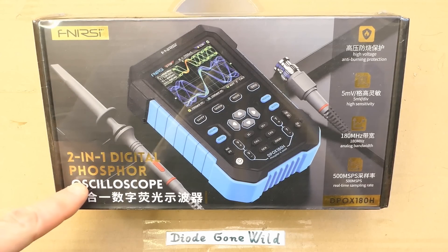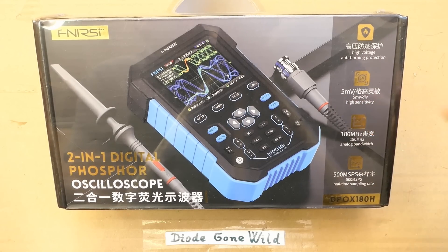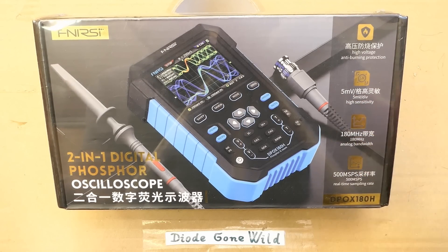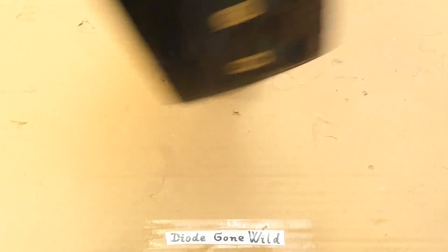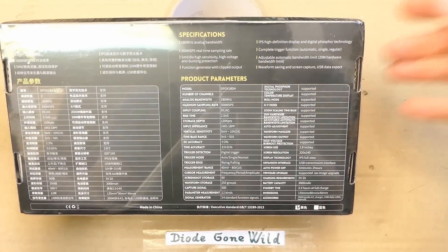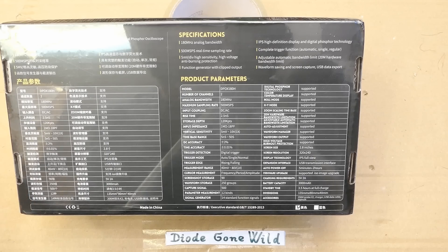So today, let's test a two-in-one digital phosphor oscilloscope from FNIRSI with 5 mV per division sensitivity, 180 MHz bandwidth and 500 MHz samples per second. Let's take a look at more specifications here. It seems to also contain a function generator, a digital phosphor, which means the pixels can have various levels of brightness, simulating a phosphor of a CRT screen oscilloscope, instead of the pixels being just on or off.